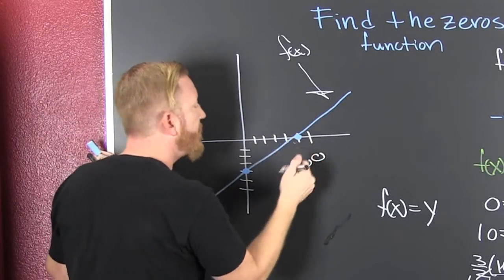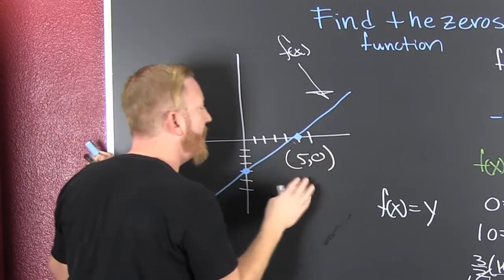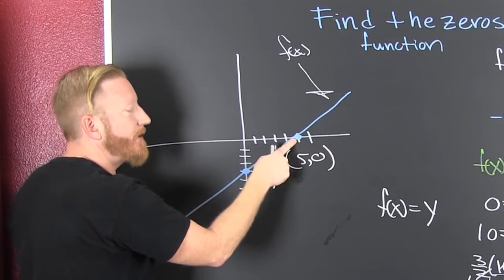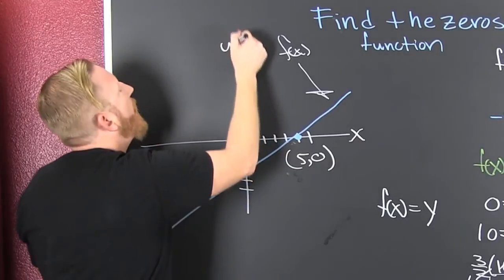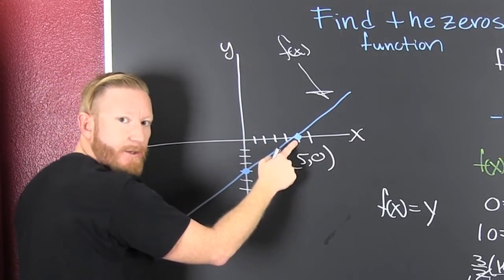Whoa. Whoa there. Five. Yeah. So what makes this zero? That right there. What? The x? Uh-huh. Was x zero? No. Y is zero. When y is zero, that's when we're finding our zeros.